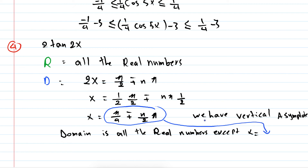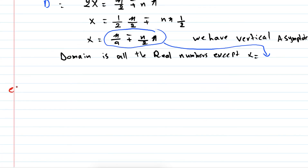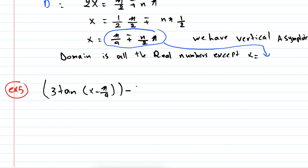For example five, suppose I have 3 tan(x - π/4) - 3, and I'm asked for the domain and range. The range is all the real numbers.